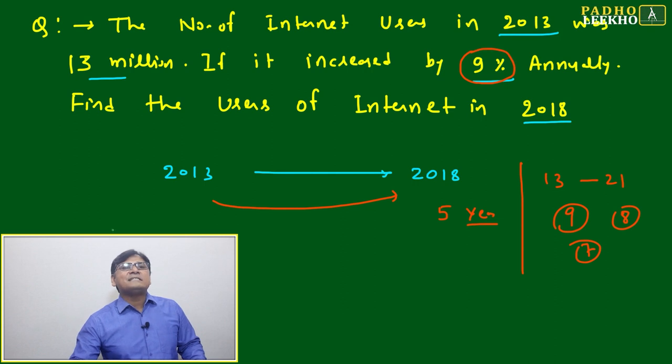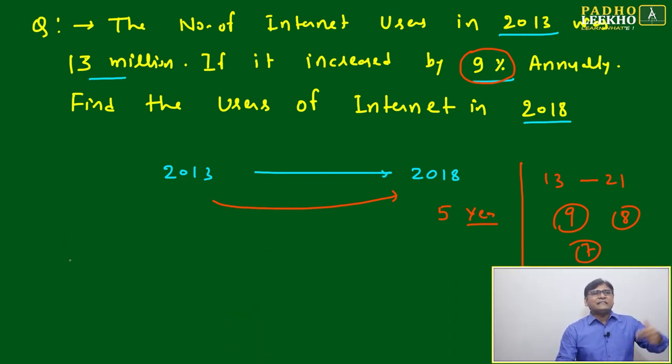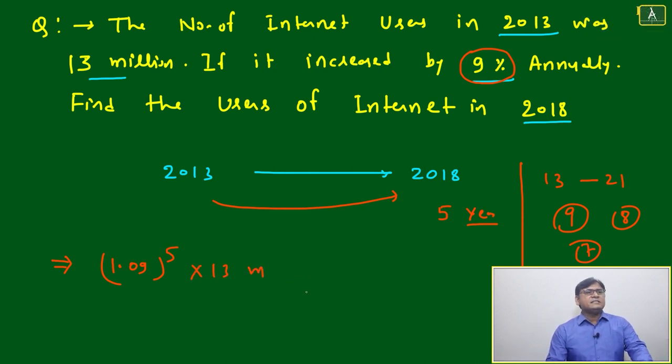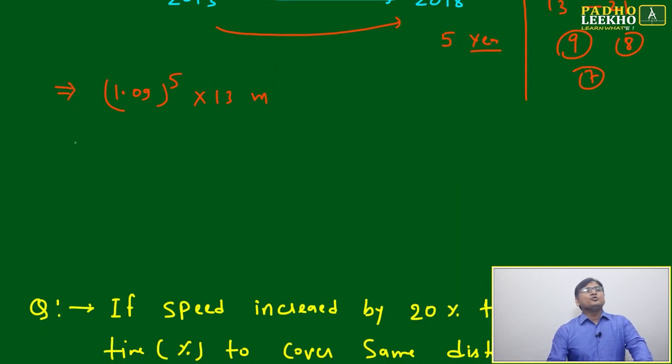So it's five years, and it's changing by 9 percent each year. It's a successive increase, whatever we just saw with the price of paneer. Same thing, only the variable changed. The question pattern hasn't changed. So 1.09 to the power 5 times 13 million. 13 million is immaterial, you just multiply it.